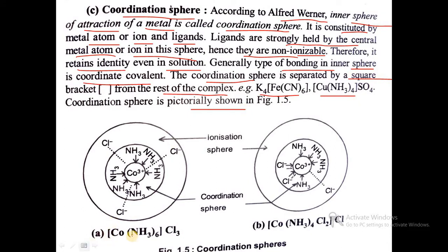In the case of [Co(NH3)6]Cl3, cobalt is surrounded by 6 ammonia molecules and 3 chlorines. The coordination sphere consists of cobalt surrounded by 6 ammonia molecules. This is a non-ionizable sphere because strong bonding takes place between ammonia and the Co3+ ion. This represents the secondary valency, and the coordination number of cobalt is 6. The coordination sphere simply represents the secondary valency or coordination number of the central metal ion, which is always fixed.